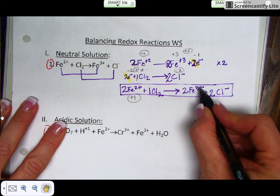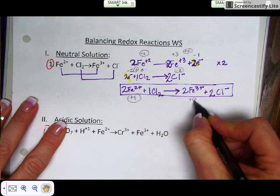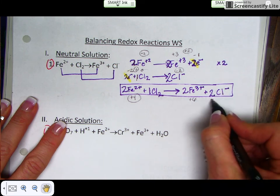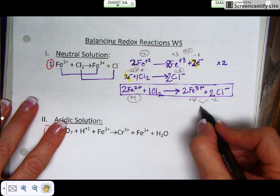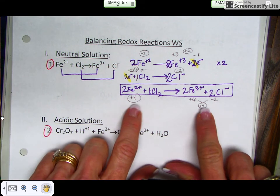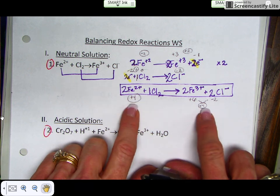2 times a +3 gives me a +6. 2 times a -1 gives me a -2. And if you add that together on this side, you get a +4 overall on this side. Both sides have the same overall charge.